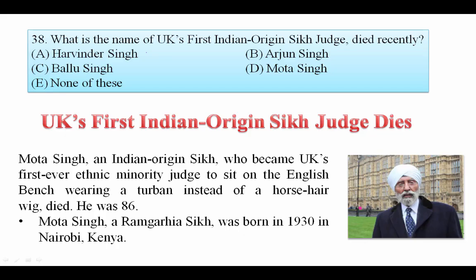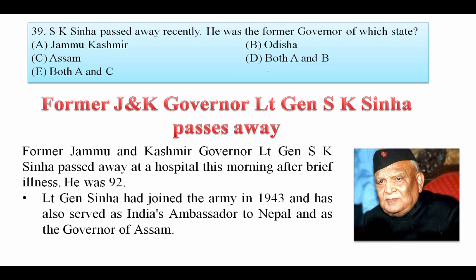What is the name of the UK's first Indian-origin Sikh judge who died recently? Mota Singh, an Indian-origin Sikh who became the UK's first ever minority judge to sit on the English bench wearing a turban instead of a horsehair wig, died at the age of 86. Your answer is Mota Singh.